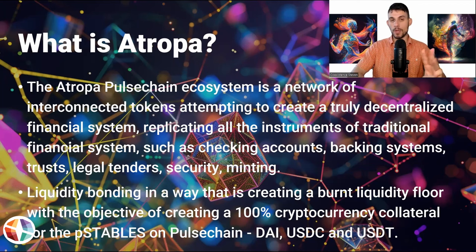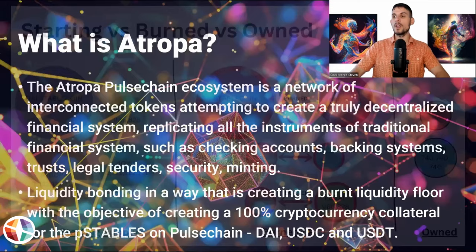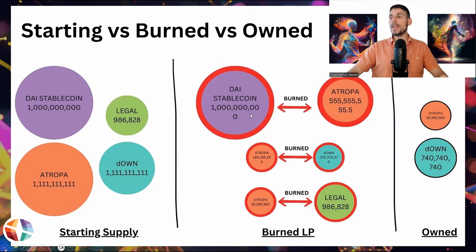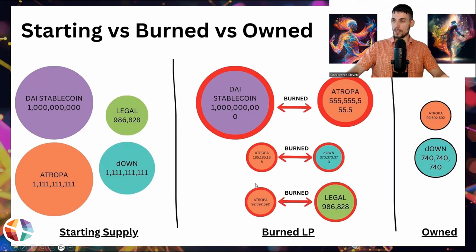The P-stables — DAI, USDC, and USDT — were the first three tokens. First was the fork: Maria purchased DAI stablecoin, created the Atropa token, then burnt the majority of the Atropa token supply with all of the DAI stablecoin. Then he created the Down token, burnt more Atropa supply with the Down token, and created Legal and burnt 100% of the Legal token with more Atropa. In the end, the dev had only a very small portion of all the tokens created.